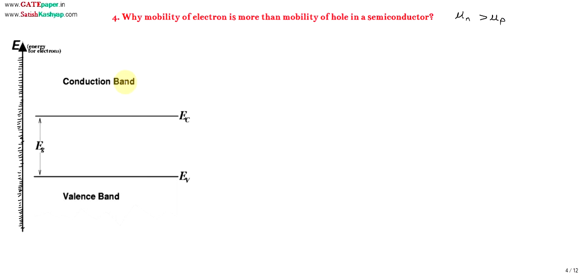We know the energy band diagram of a semiconductor. In the energy band diagram, energies are on the y-axis. Energy levels are discrete in nature, so we work with discrete energy levels.